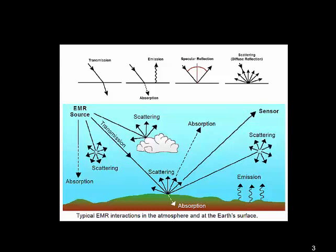Each of these have different effects on the radiation as it passes through the atmosphere, and it affects how much of that radiation reaches the Earth's surface. In the next slides, we'll talk about some of these processes.